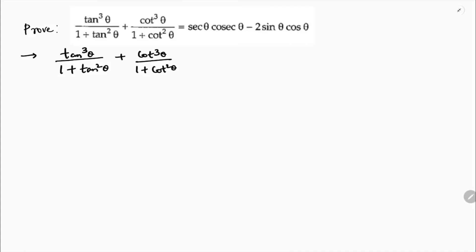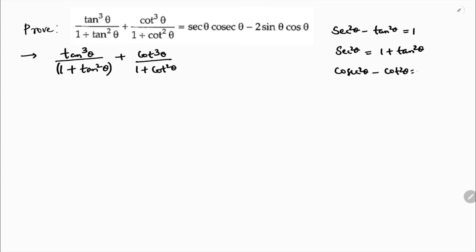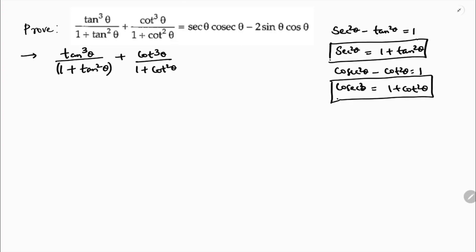Now observe the identities. We know that sec²θ − tan²θ = 1, so directly we can write 1 + tan²θ as sec²θ. In the same way, cosec²θ − cot²θ = 1, so cosec²θ = 1 + cot²θ. So sec²θ is 1 + tan²θ and cosec²θ is 1 + cot²θ.